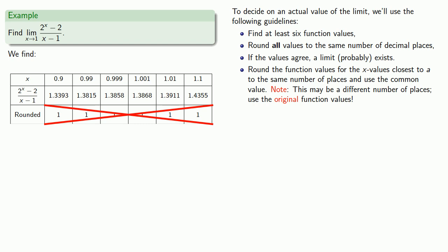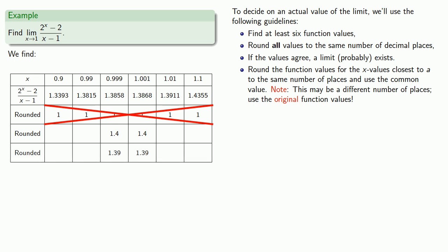So all of our rounded values agree, so there's probably a limit. If I round the values for 0.999 and 1.001 to one decimal place, I get 1.4. If I round them to two decimal places, I get 1.39. And if I round them to three decimal places, they disagree. So I'll leave them rounded to two decimal places and conclude that these values suggest a limit of around 1.39.